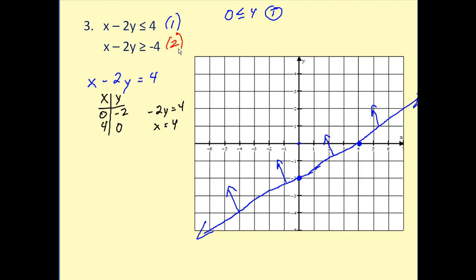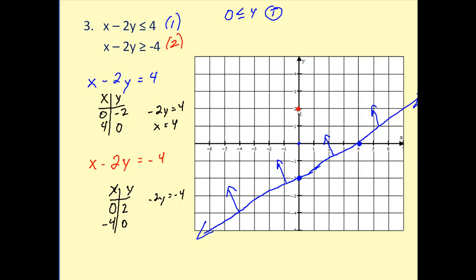Now we'll graph the line x minus two y equals negative four. We'll find the intercepts. When x is zero, negative two y equals negative four, so y equals two. When y is zero, x equals negative four. We plot these two points: (0, 2) and (-4, 0). Testing (0, 0) again: zero is greater than or equal to negative four, which is true. So we shade the same side as the test point — shading down.